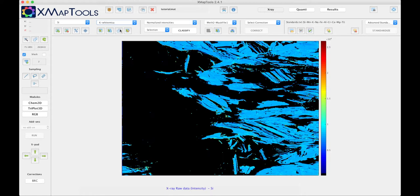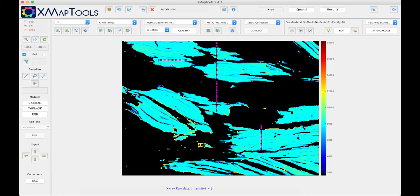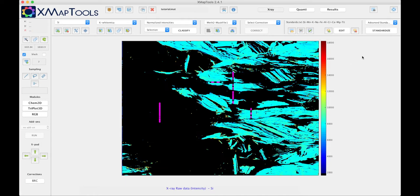For that we need a phase, in this example white mica, and we need to have some spot analysis that we use as internal standard. In this example I already unselected some of the spot analysis, those that were located near the grain boundary or near mineral inclusions.